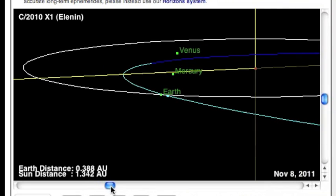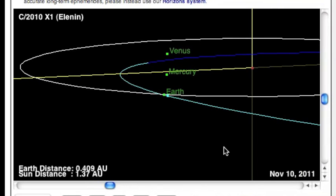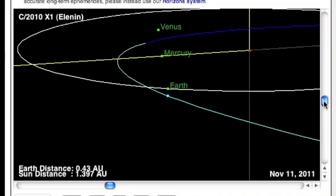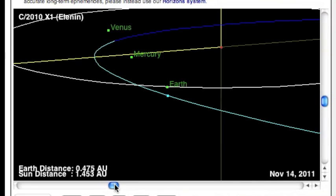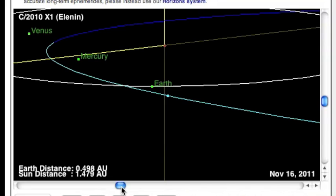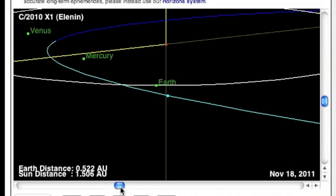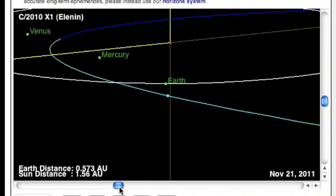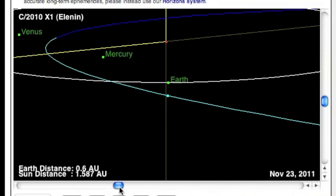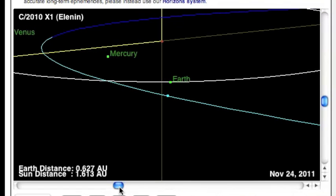The trolls and debunkers still had us at this point, though. They said, if this thing is so big to cause earthquakes, why can't we see it? We cannot say for sure who first tied Nibiru and a dwarf star into this Elenin mix, but such a dark object might explain why Elenin was invisible to us.